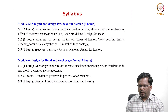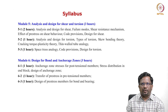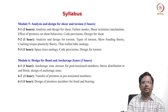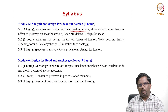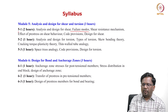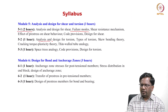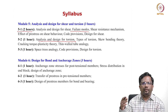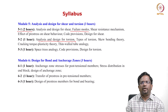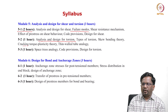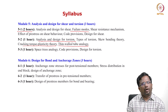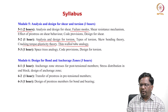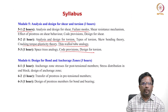Module 5 covers shear and torsion analysis and design. We will discuss what shear is, why shear design is important, the failure modes in shear, the shear-resisting mechanisms of a pre-stressed concrete member, and how it differs from reinforced concrete. Then we will move on to analysis and design for torsion — the different types of torsion, various theories such as skew bending theory, cracking torque using plasticity theory, and thin-wall tube analogy. We will also cover how code provisions evolved over time and what simplifications have been incorporated.